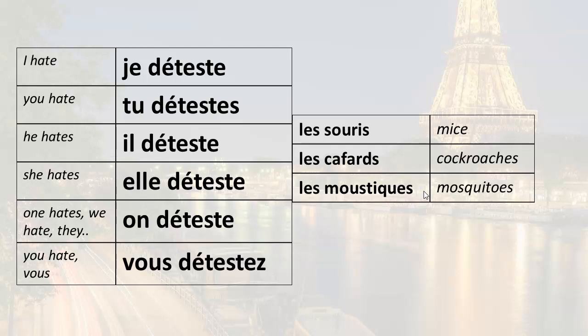She hates — elle déteste. Elle déteste les moustiques — she hates mosquitoes. Elle déteste les moustiques.